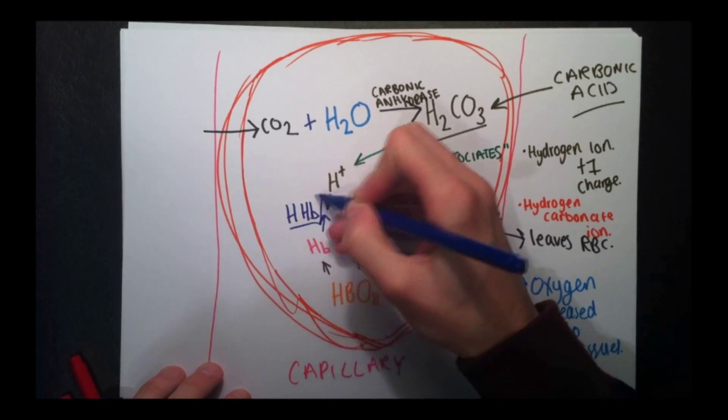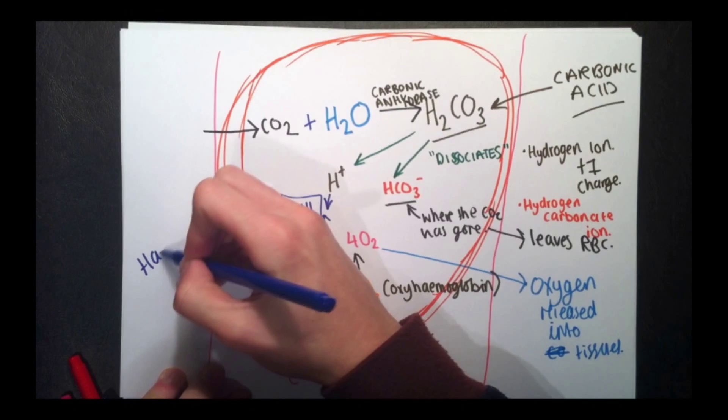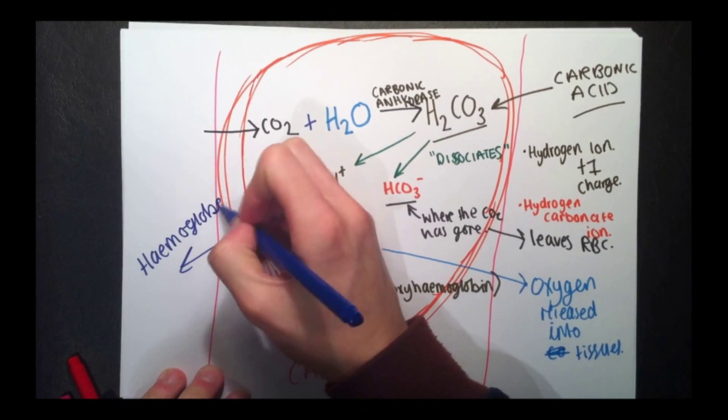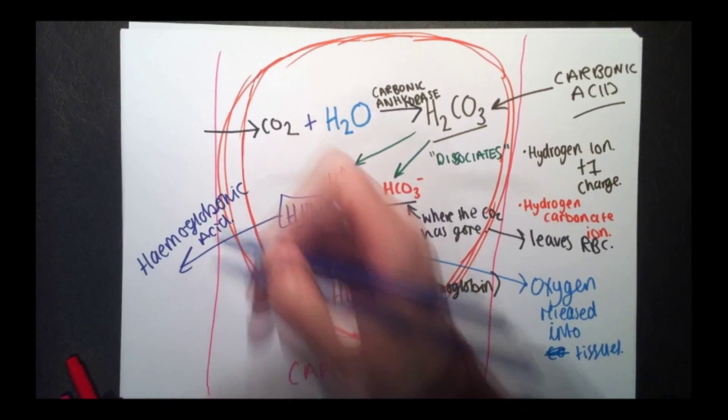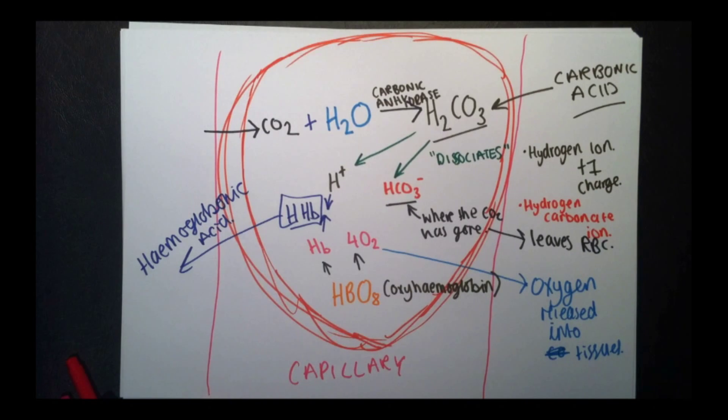Here, the hydrogen ions bond with the hemoglobin to form hemoglobinic acid. The purpose of this acid is to stop the cell becoming too acidic with all the positive hydrogen ions that are just floating about in there. That's why they're taken up with the hemoglobin.